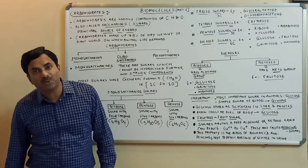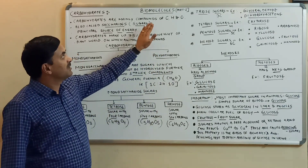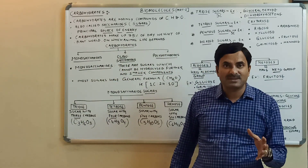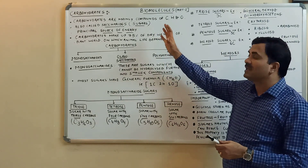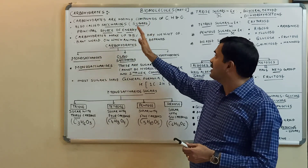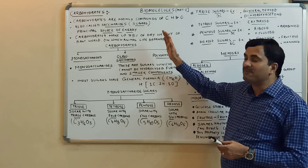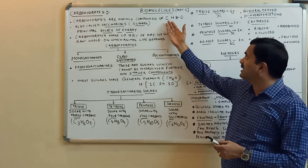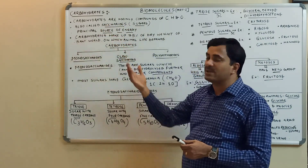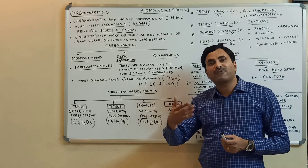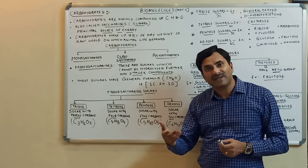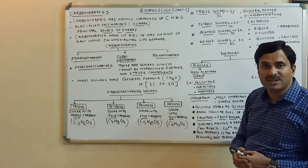Hello, today we are going to study about a very important topic known as biomolecules. As we know, there are three important biomolecules: carbohydrates, fats, and proteins. In this video we will be discussing carbohydrates. These carbohydrates are generally called saccharides — we always say monosaccharides, disaccharides, oligosaccharides, polysaccharides.